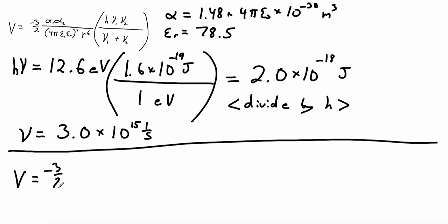So it's minus 3 halves, polarizability for molecule 1 times molecule 2. And they're the same, so we can just plug in 1.48, 4π epsilon 0 times 10 to the negative 30 meters cubed. We're going to square that.